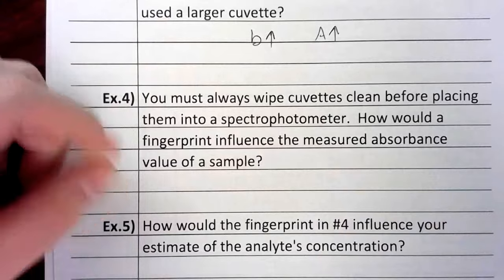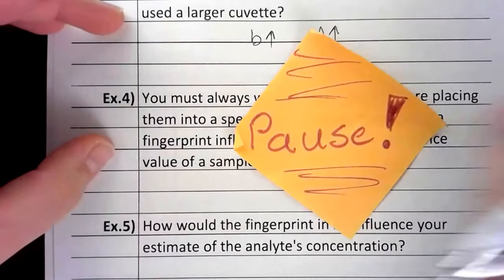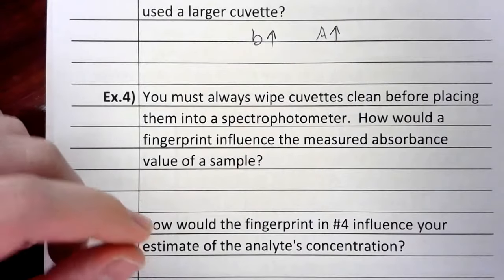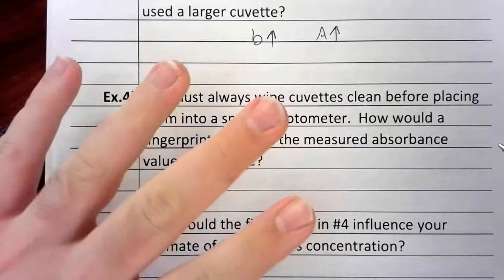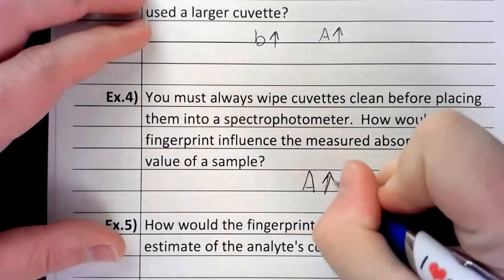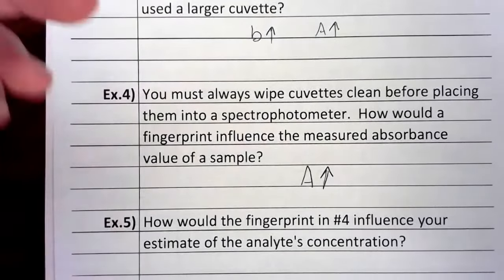So take a guess on number four. How would a fingerprint mess with this? Very simple. Same way a fingerprint messes with light as it travels through a piece of glass. If I put a fingerprint on something, it's going to block some of the light. So the immediate effect of that is that absorbance would go up if there was a fingerprint on the cuvette. So it's important to always wipe them.